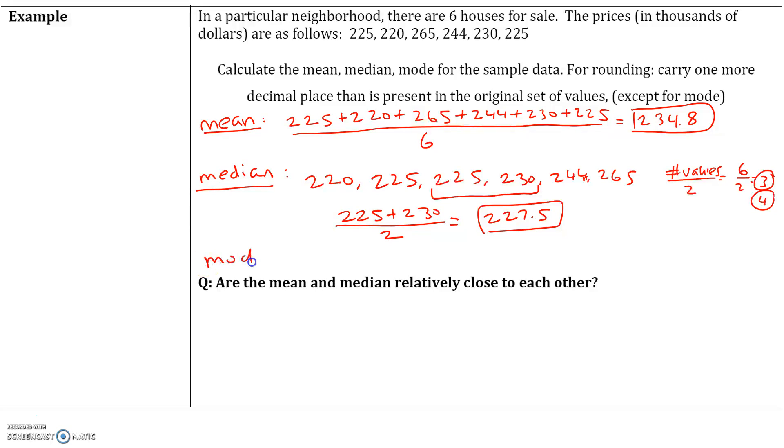Our mode is simply the most frequently occurring number, that's 225. Now here's a question: are the mean and median relatively close to each other? In this case, yes, they are, because this data set is symmetric and unimodal, which means that the mean and the median will be fairly close to each other.